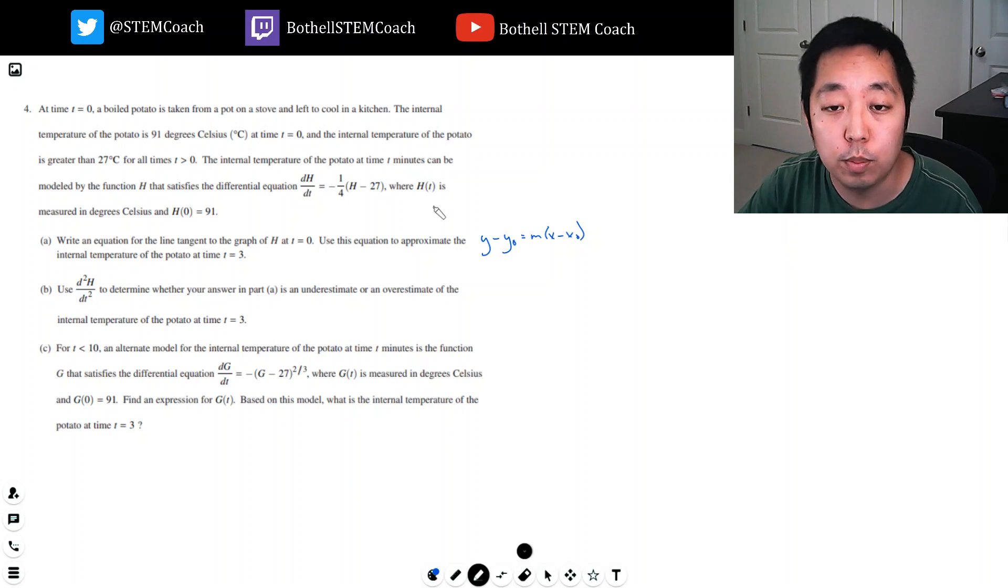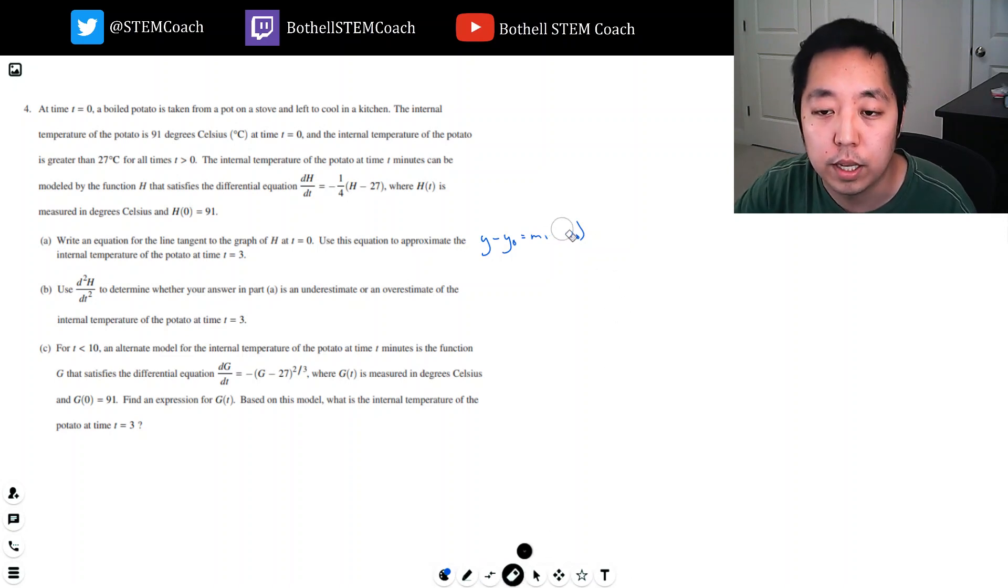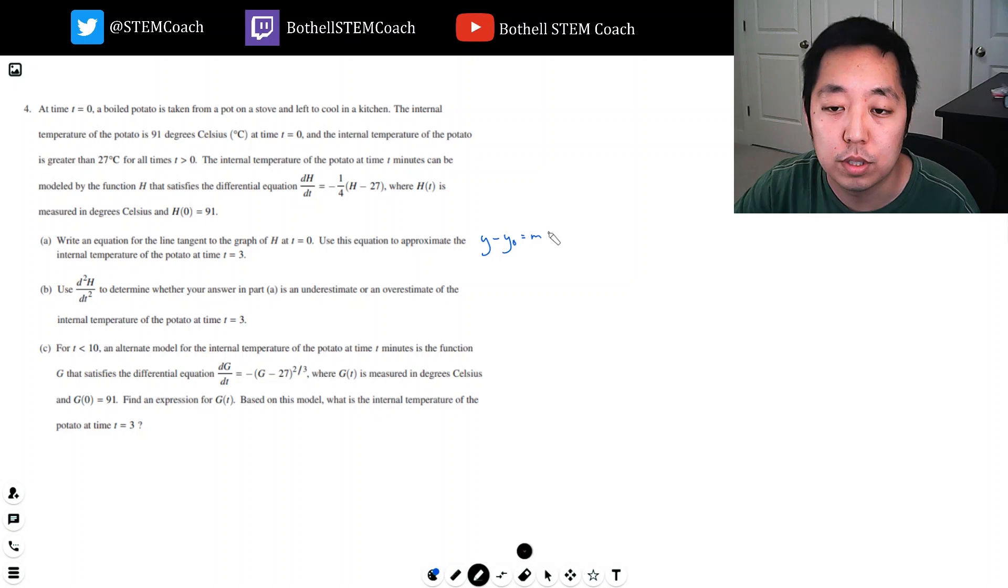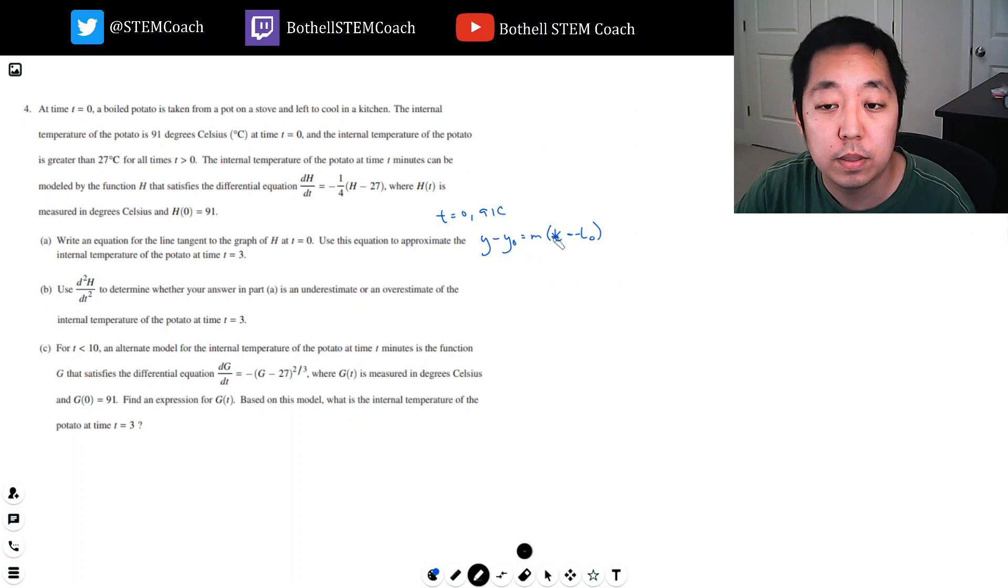The point's pretty easy. Instead of x, it needs to be t, but it's not a big deal what letter you use. In this case, the point we're interested in is t equals zero and 91°C because they tell you. I'm just going to do it in terms of x because you're more used to seeing it. So it's y minus 91 equals m times x, because x₀ is zero, we're at time t equal zero.